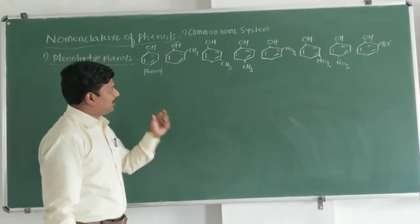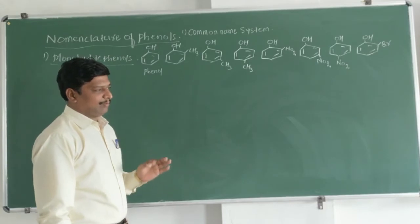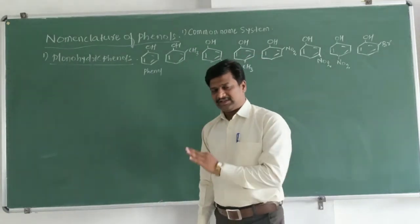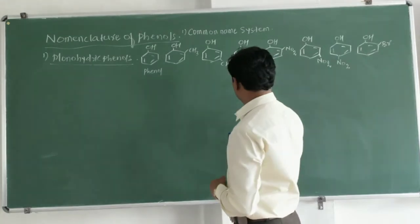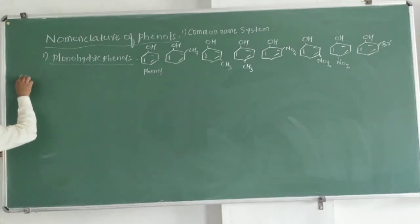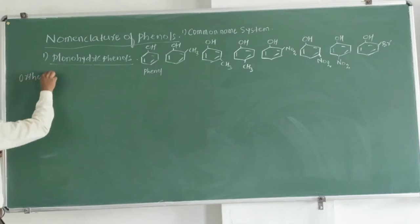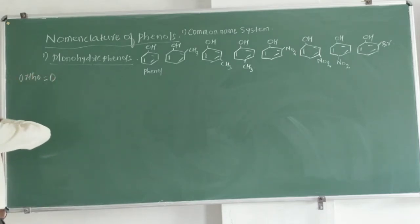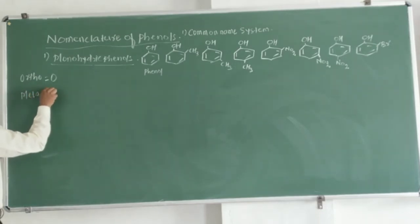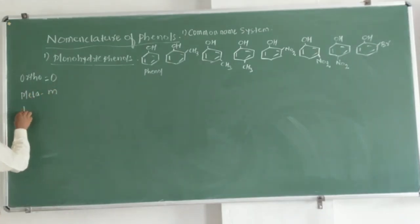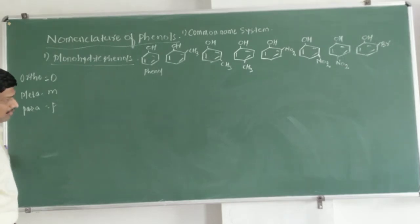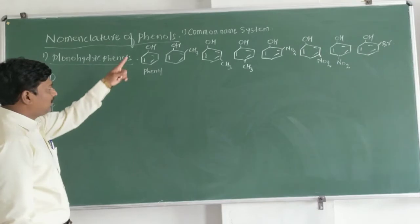In aromatic compounds, in the common name system, three prefixes are used, and each is different from n, iso, neo. These three prefixes are: ortho (abbreviated as o), meta (abbreviated as m), and para (abbreviated as p). These three prefixes are used in the common name system.